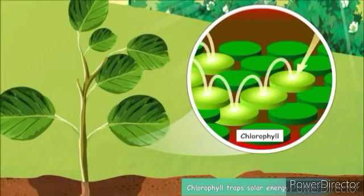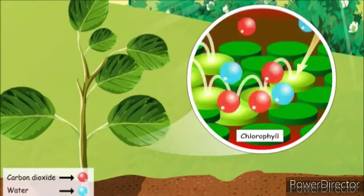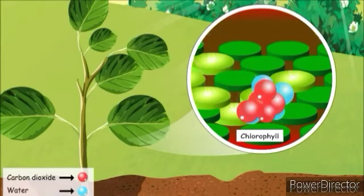Chlorophyll is a special substance present on the upper surface of the leaves. Once all the ingredients are present, leaves use energy from the sunlight and change water and carbon dioxide to food and oxygen.